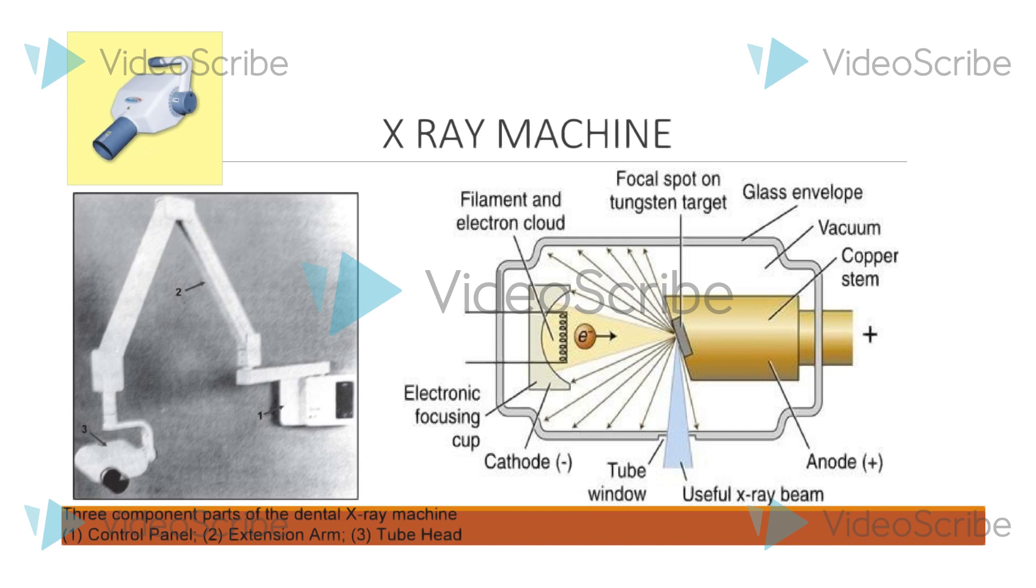Focal spot is the area on the target which the focusing cup directs the electrons and from which the X-rays are produced. Small focal spot size greater the sharpness of the image.